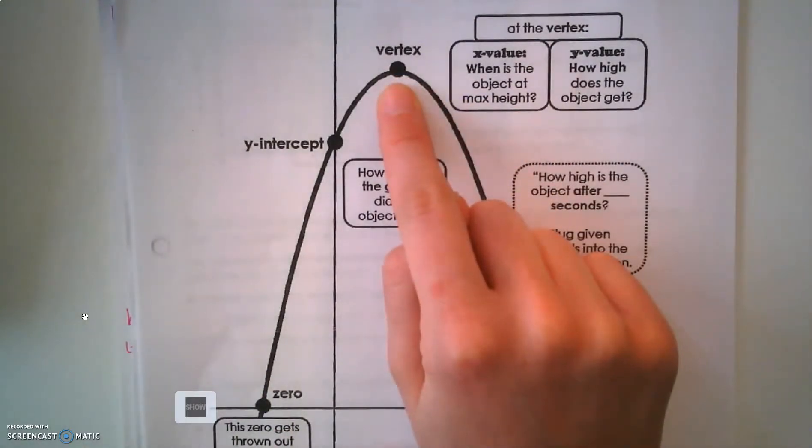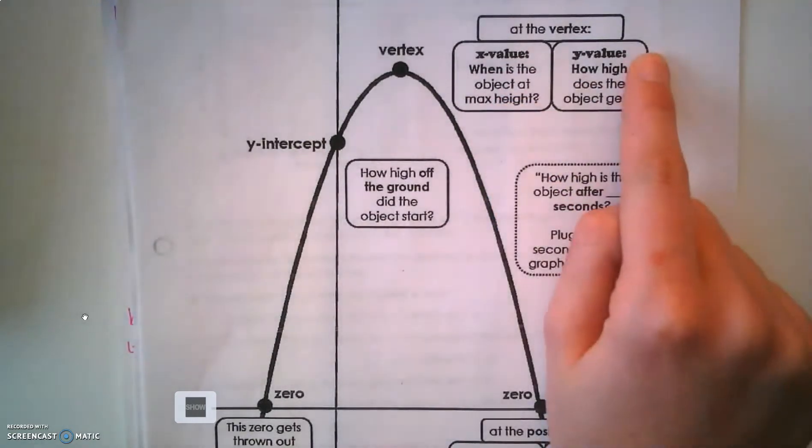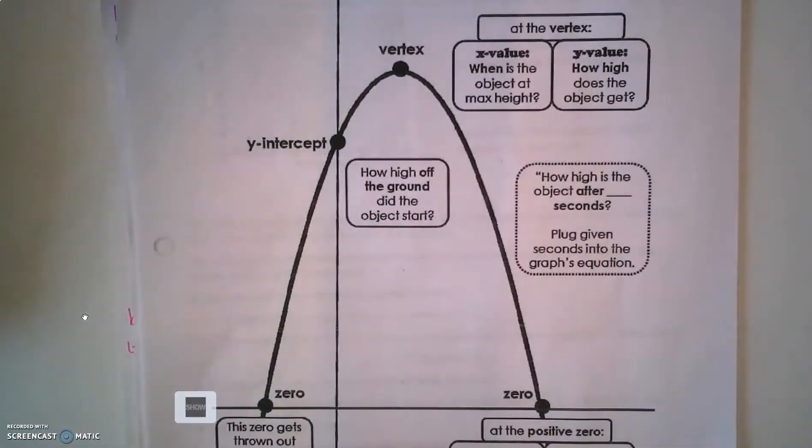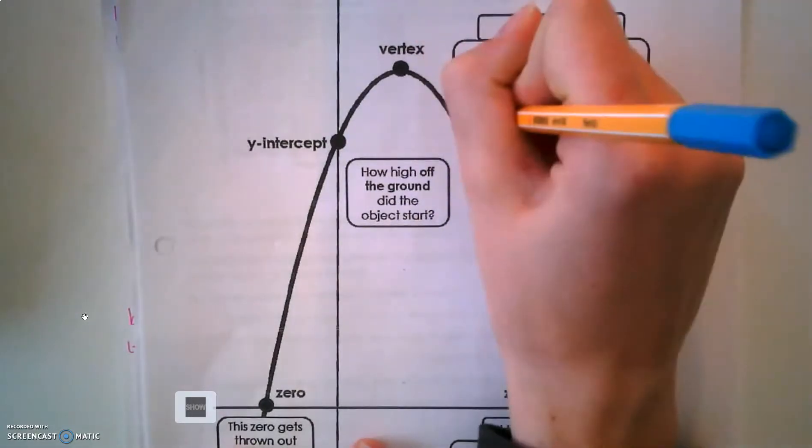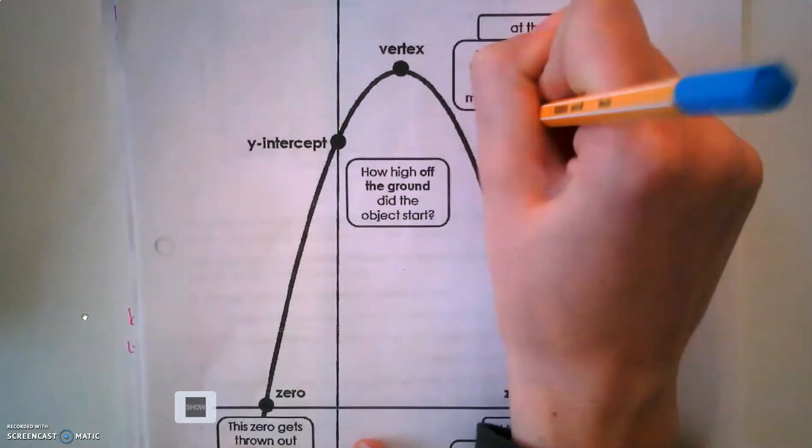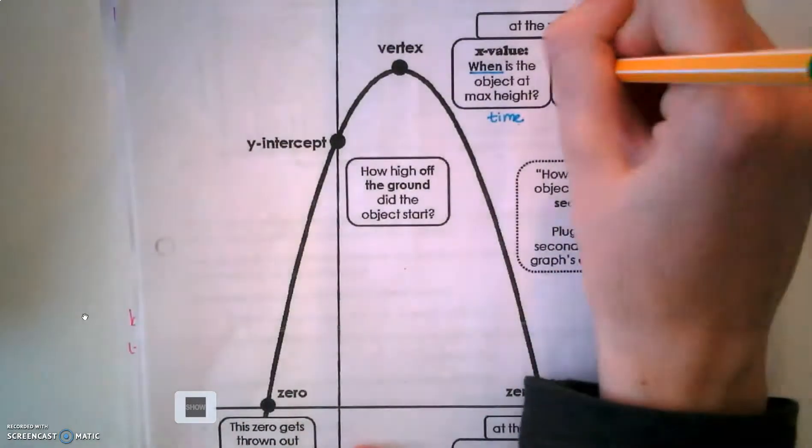My vertex, remember, is a maximum and a minimum - it's the highest or the lowest point on my graph. At the vertex, if I want to talk about the x value of my vertex, I'm going to ask when is the object at the max height. If I want to know the y value, I'm going to know how high does that get.